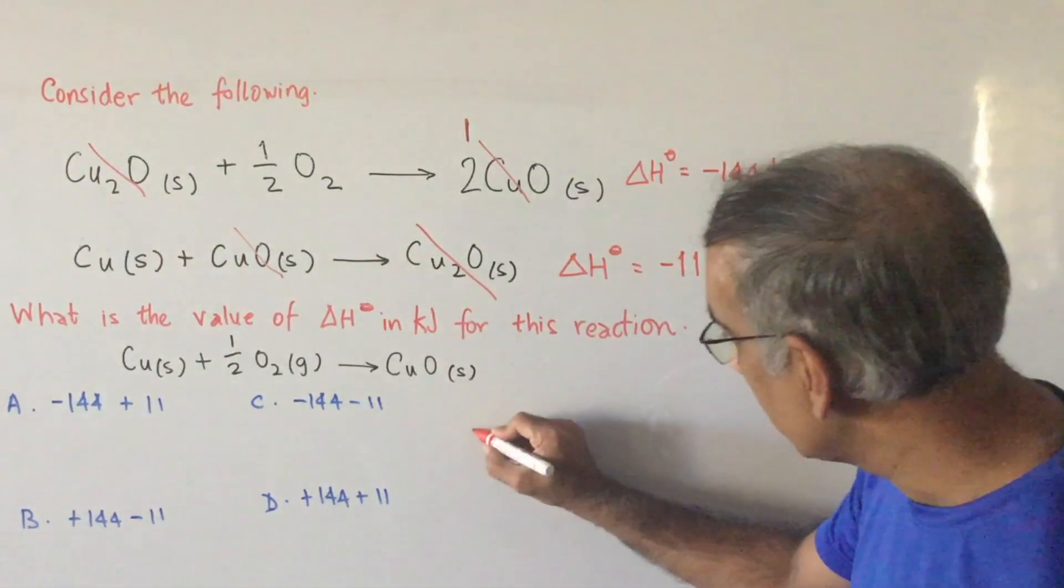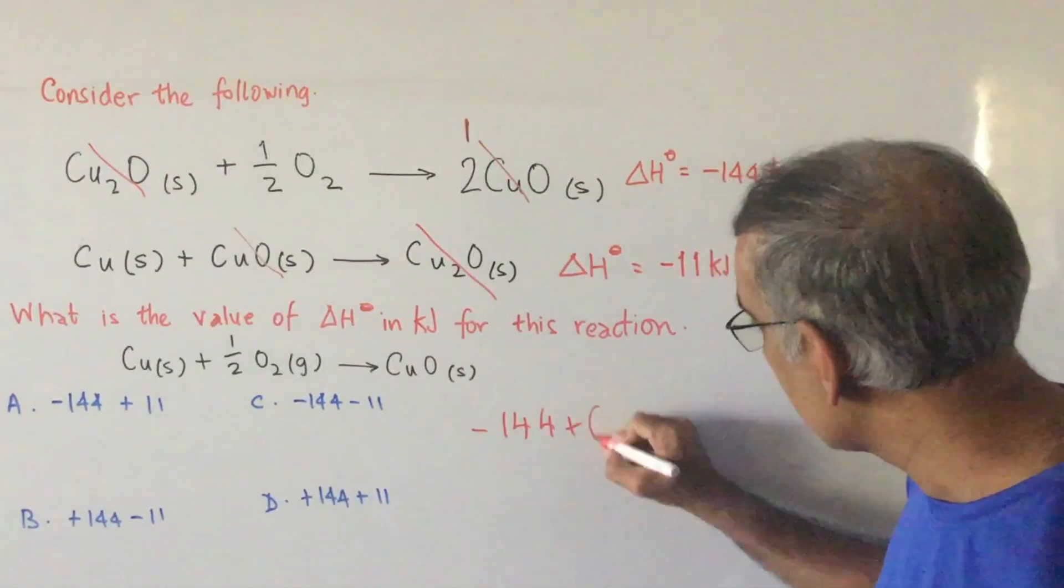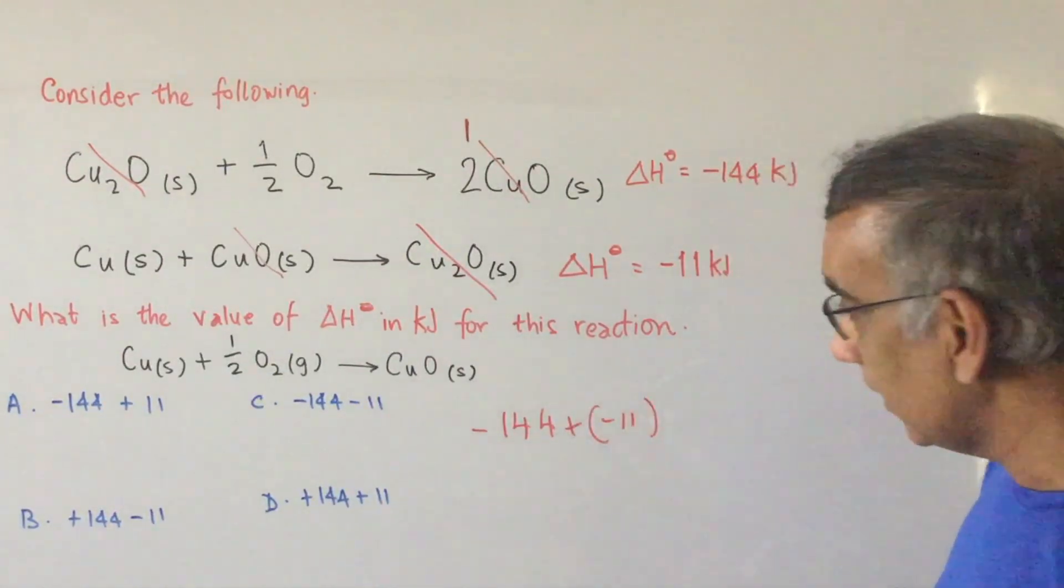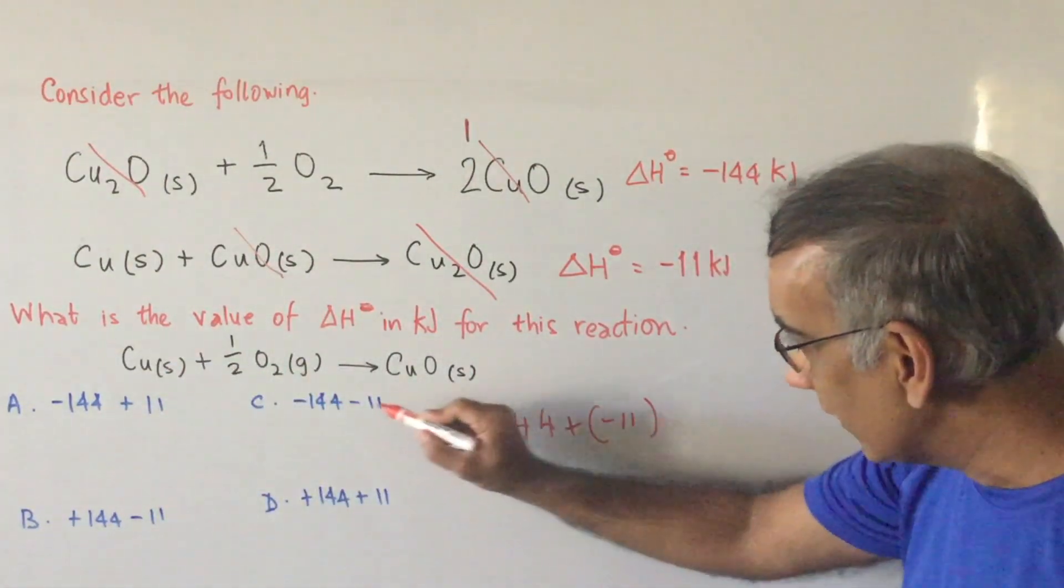So technically what we're doing is minus 144 plus minus 11. There's no such answer, but this one,